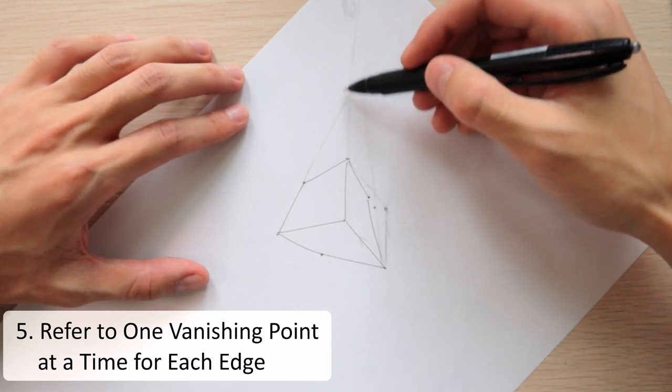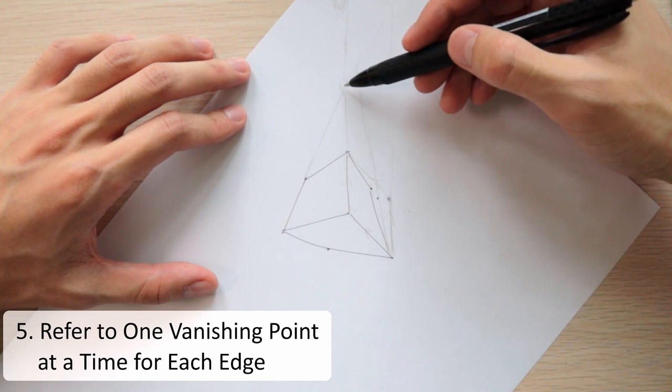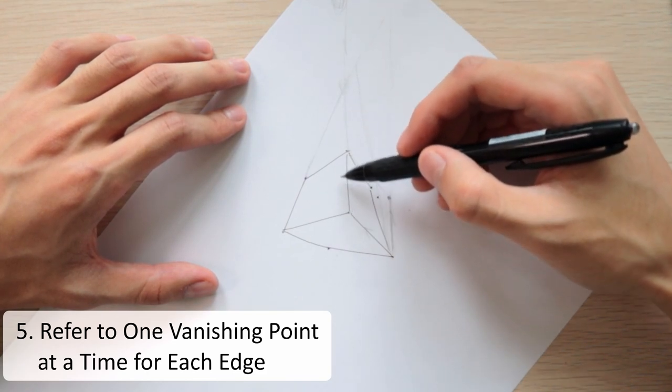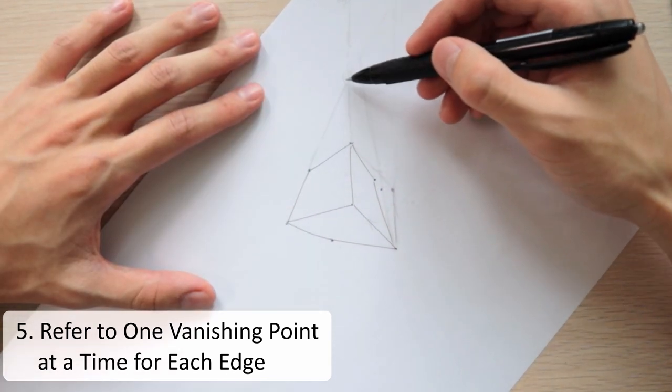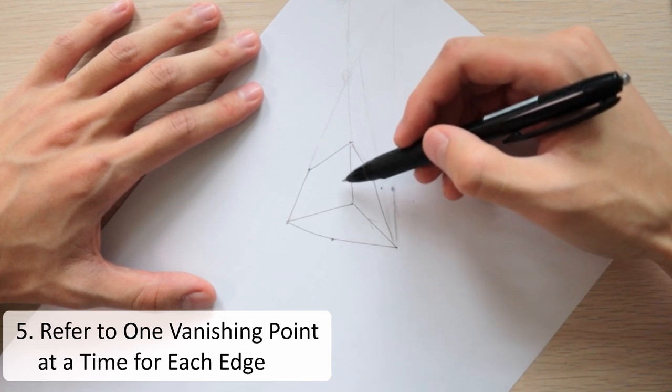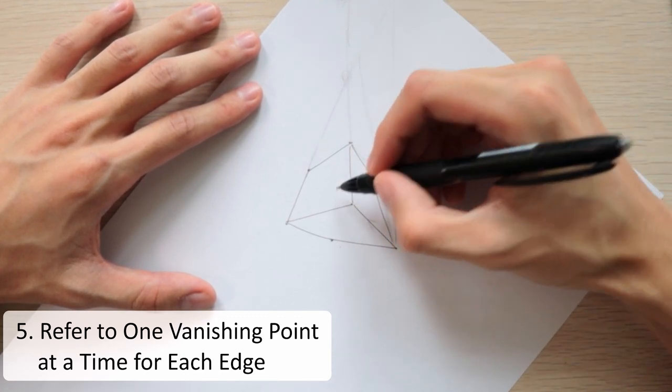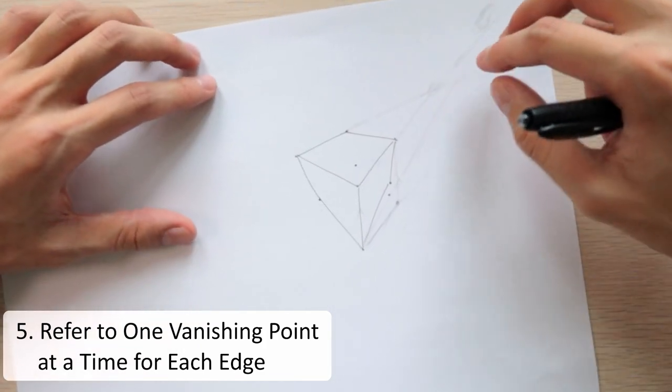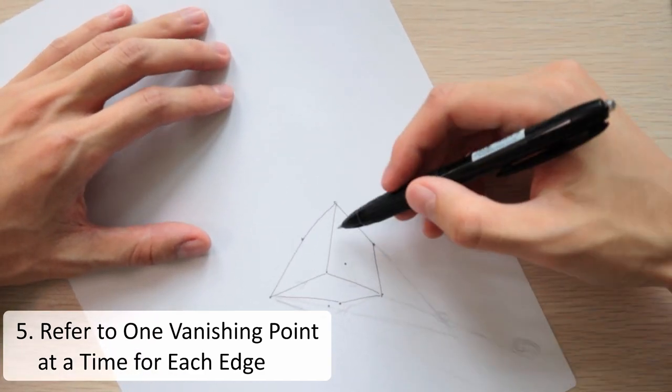For example, let me use this vanishing point. I see that these three edges are moving towards this vanishing point and when you put in the next dot, there's going to be another edge that also follows this vanishing point. I'll use this vanishing point as a reference to where the corner of the box is going to be. So let me just estimate that this is going to be the next corner.